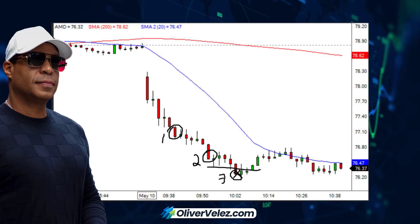Do we have to pay attention to the NASDAQ — how it opens, what its first bar is doing? It can be a guide sometimes. A powerful red elephant bar means you've got nice, solid elephant bars in a lot of your NASDAQ stocks. Do you really need it? No. Can it be helpful sometimes? Yes. But you can just look at your stocks and see the same thing.